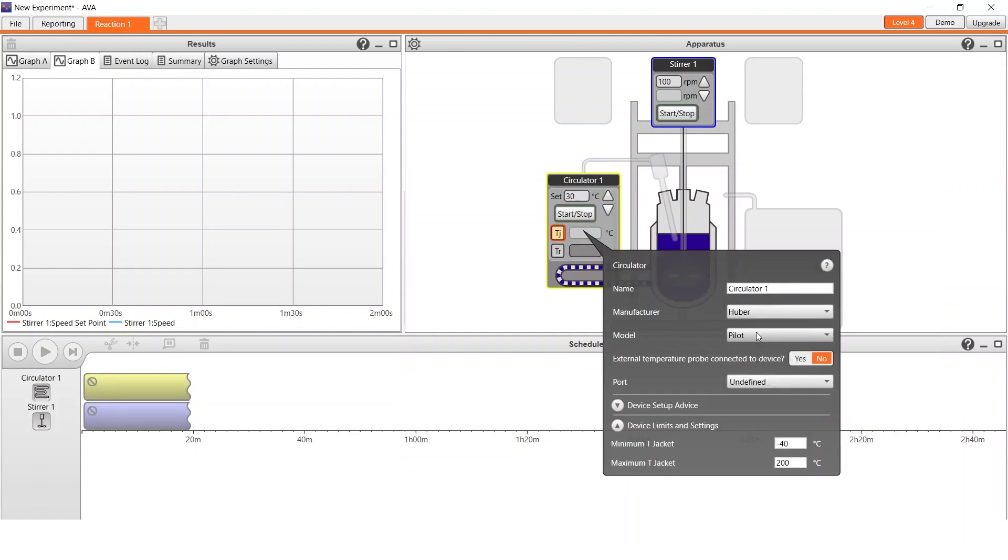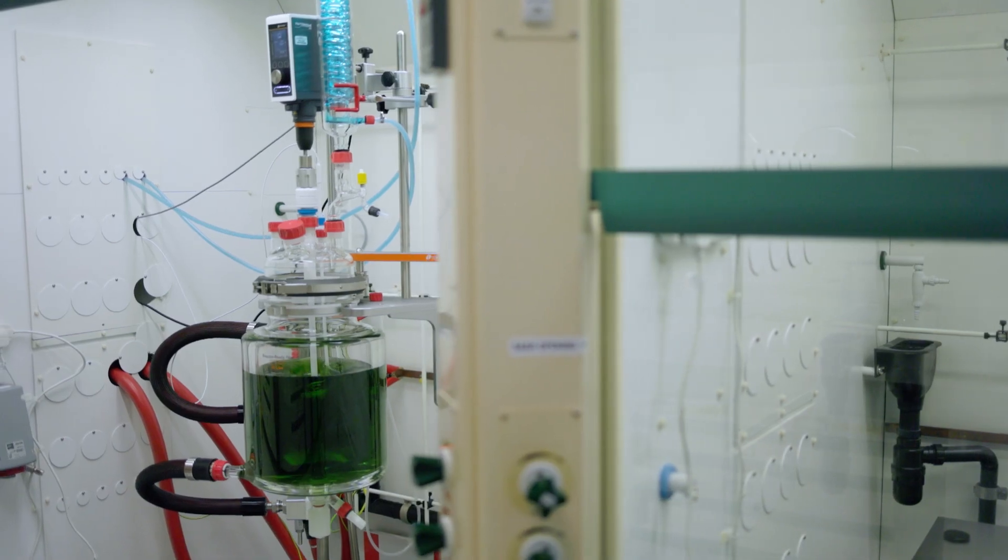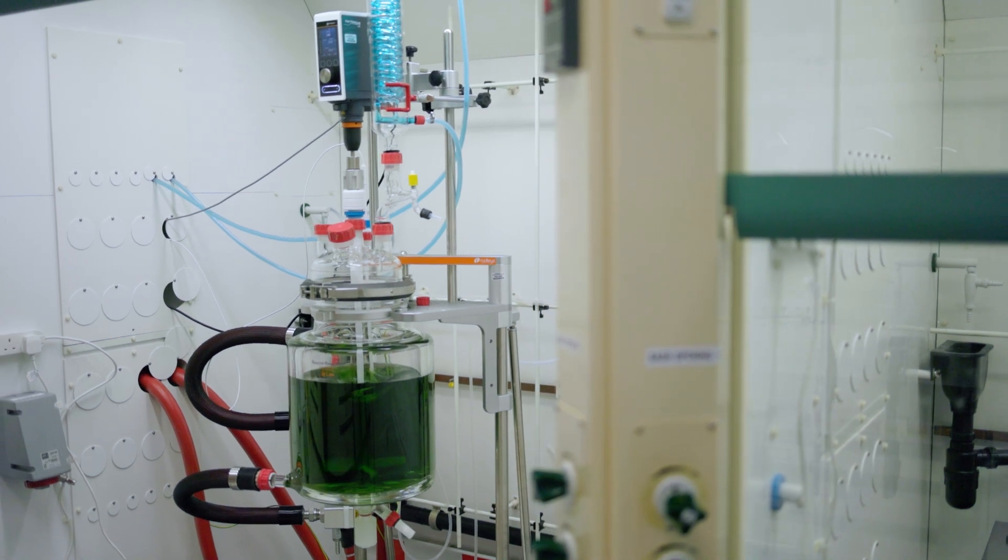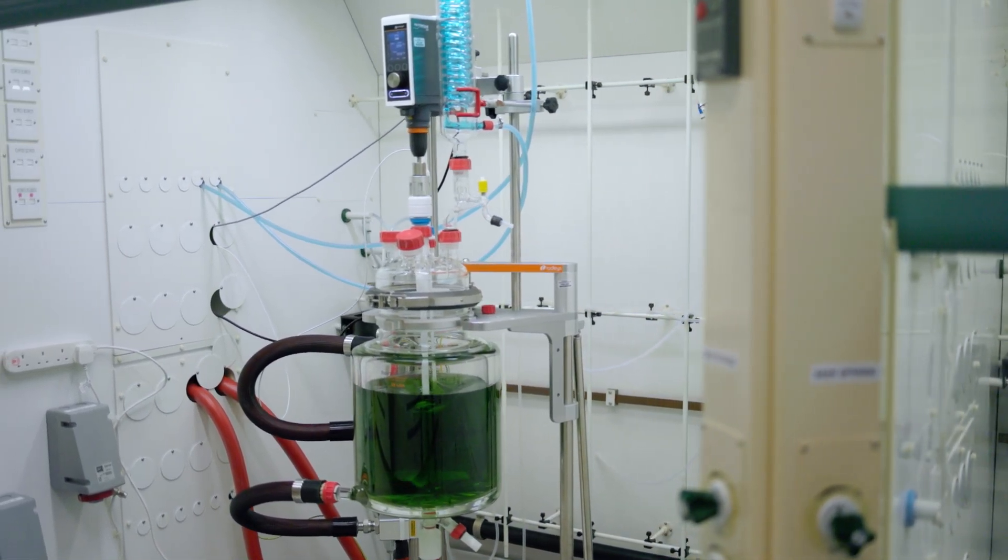It also controls the Hubers and the stirrers. With Ava we don't have to go into the fume cupboard so much, so I find it's a much safer way of doing chemistry. Beforehand we would have to be tinkering inside the fume cupboard, but instead everything can be done on the software and it just makes things a lot safer.